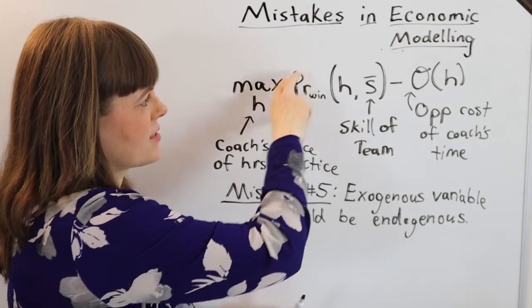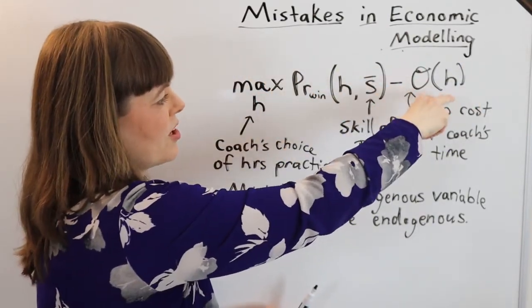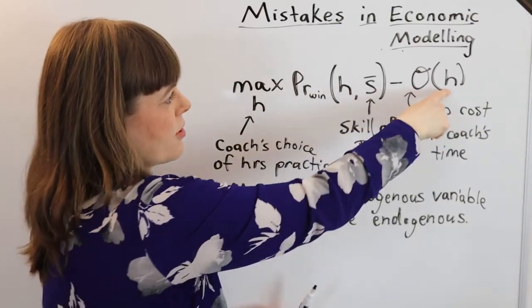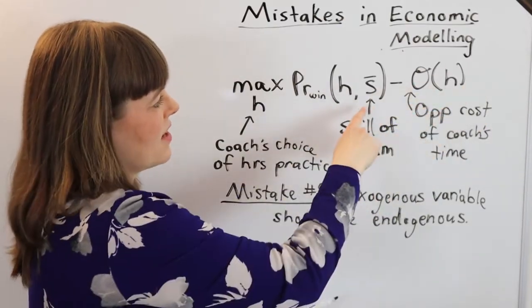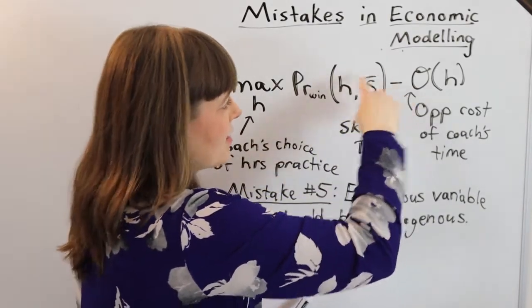So here we have the coach's choice of how many hours of practice per week to have with the team. And of course the coach is trying to maximize the objective function: probability of winning minus opportunity cost of the coach's time. Both of those are a function of the hours practiced.